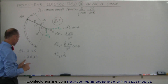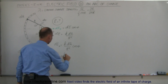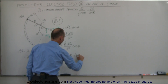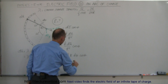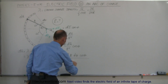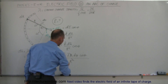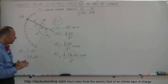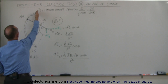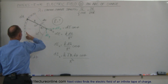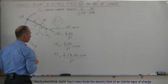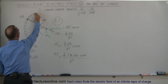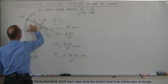Substituting into the equation, DE in the x direction equals K times lambda R times D theta times cosine of theta, divided by R squared. The R cancels out. To find the total electric field, we integrate from one end to the other, or we can go from 0 to 60 degrees and double it by symmetry.